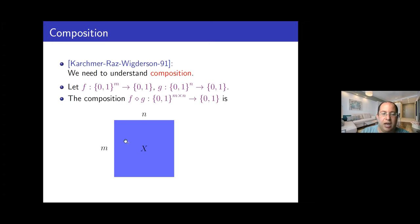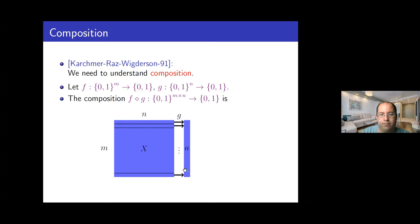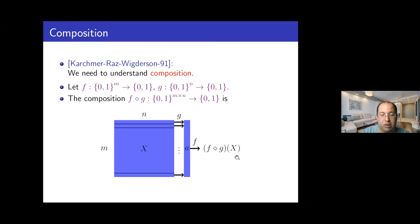The rows of that matrix are valid inputs for G, so we can compute G on each of those rows and get a string A of length M, which is a valid input for F. So we can compute F on this string, and we define the resulting bit as the output of the composed function. This is a very natural way to compose Boolean functions. The next question is: what is the depth complexity of this composition, or how this operation behaves with respect to depth complexity?